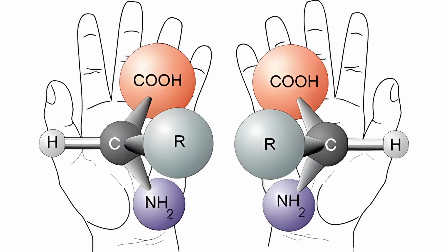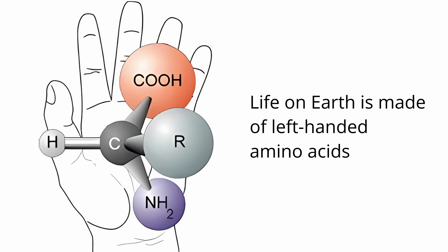Controversy over amino acid chirality: Another aspect of the controversy was the fact that the amino acids produced in the experiments had a mixture of left-handed and right-handed forms, known as chirality. In living organisms, amino acids are exclusively of one chirality.